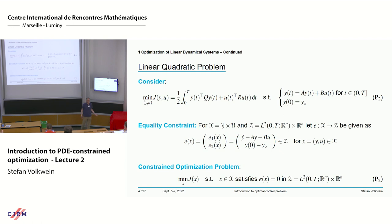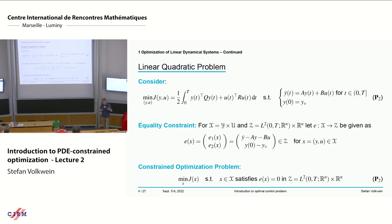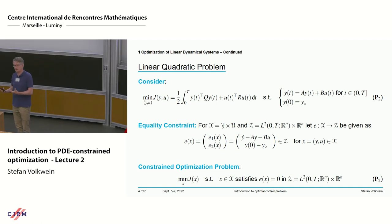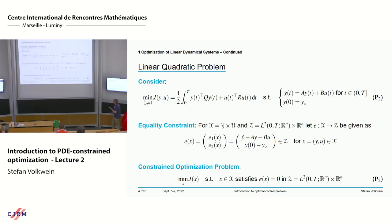I'm doing this because I want to apply this Lagrangian framework, set up the Lagrangian, derive formally the first order conditions, and from there get an idea how to compute solutions. As we learned yesterday, existence proofs only use minimizing sequences and don't give you an idea how to compute. So we need this optimality condition — that's the idea for writing it in this abstract form.